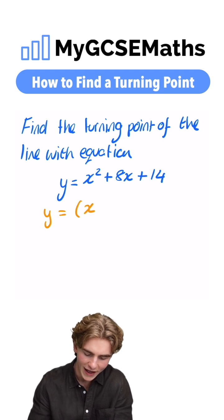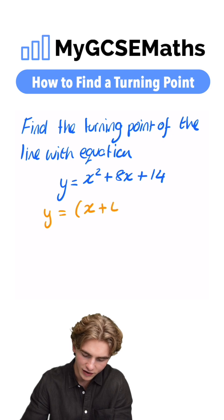We're going to write out y equals, and then we're going to open a bracket, write in our x. We're going to look at the number next to the x. Here it's an 8, and we're going to halve it. So we have plus 4.